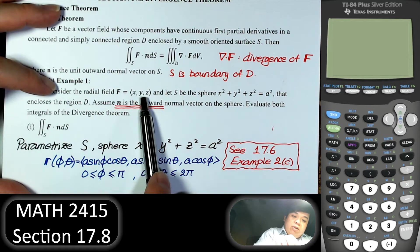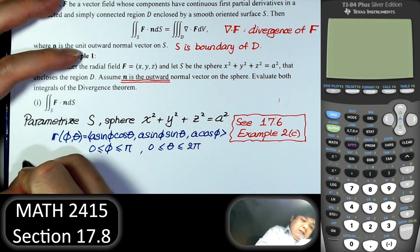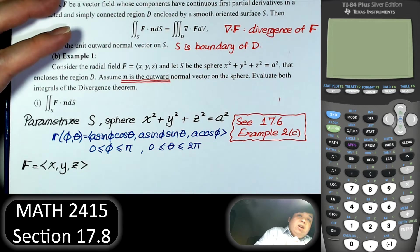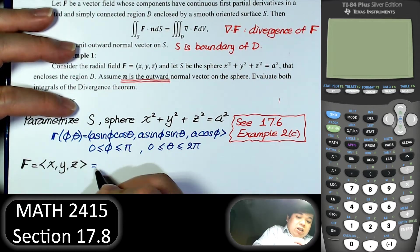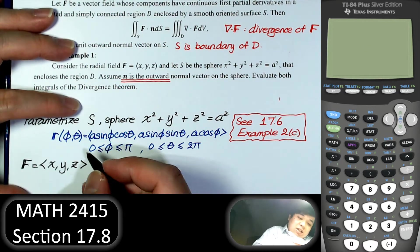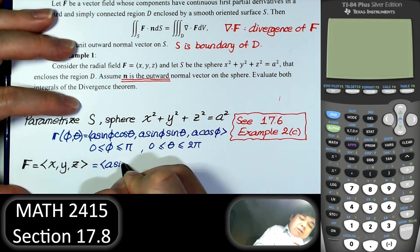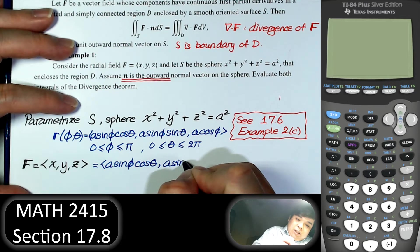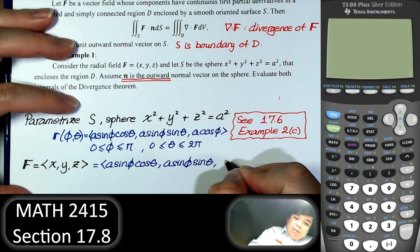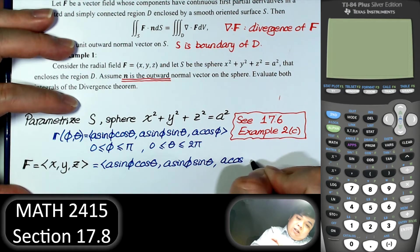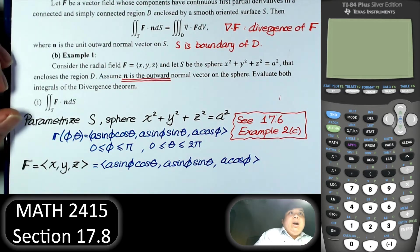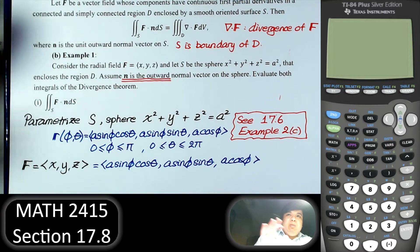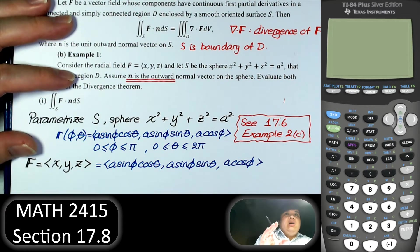Next, we write the vector field in terms of the parameters. The vector field is F = (x, y, z), so in terms of parameters it becomes (A sin φ cos θ, A sin φ sin θ, A cos φ). These steps are almost the same on every line or surface integral problem.